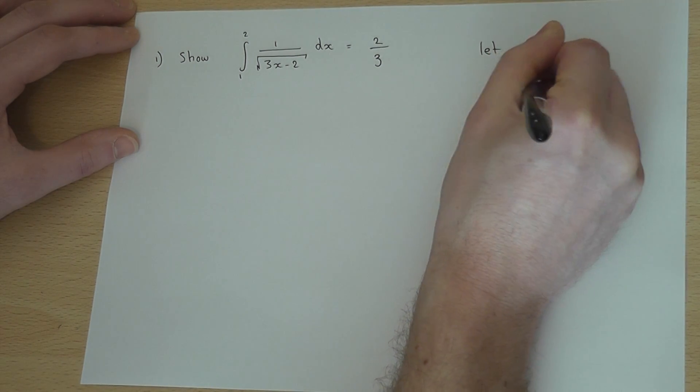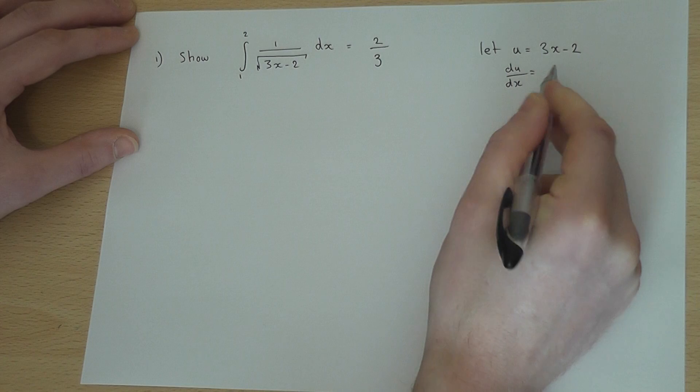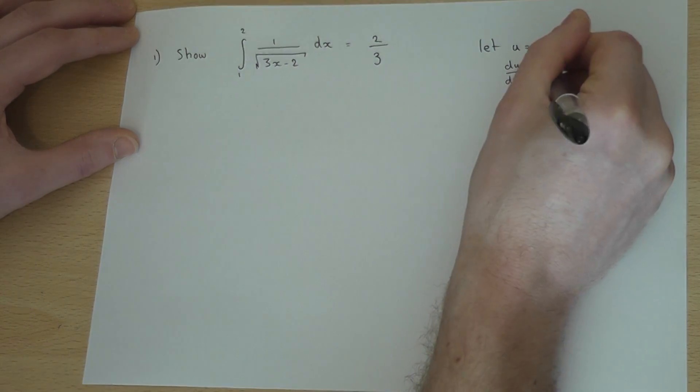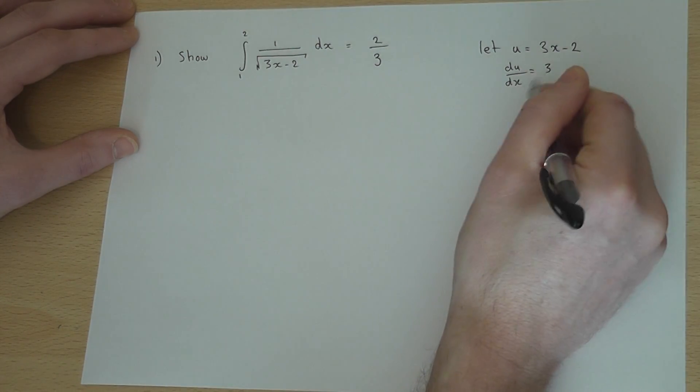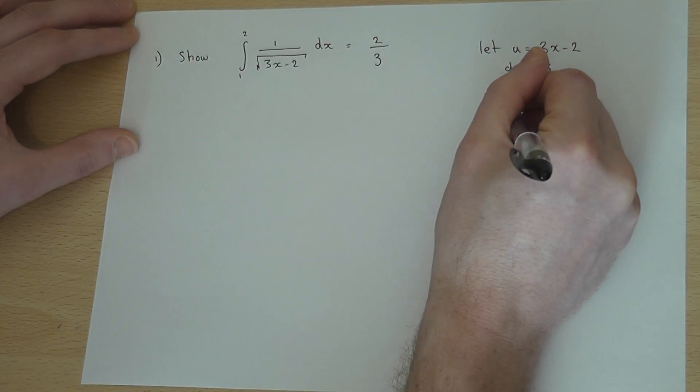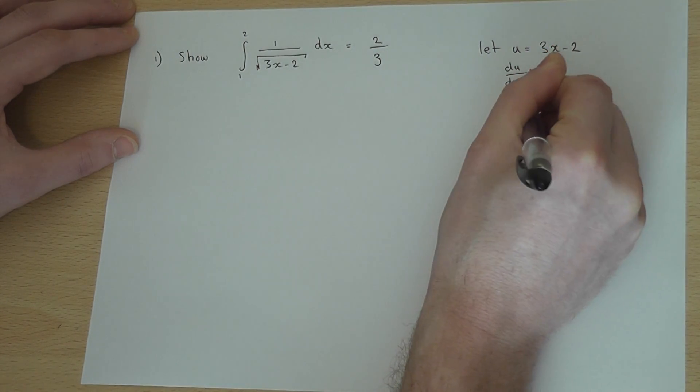So if I find du by dx, i.e. differentiate, I get du by dx equals 3. So therefore, if I cross-multiply and rearrange, I get du over 3 equals dx.